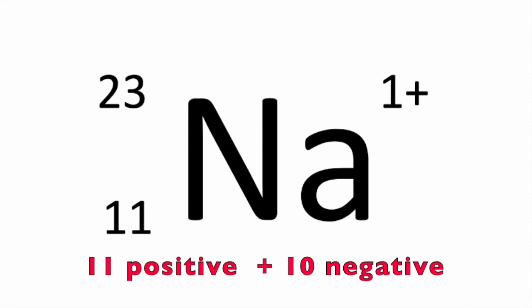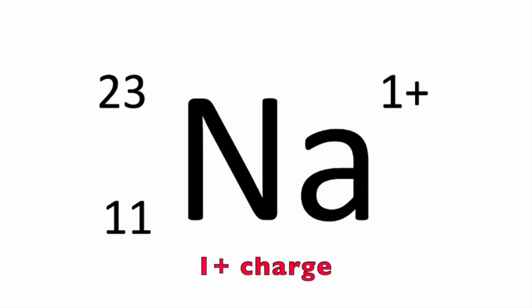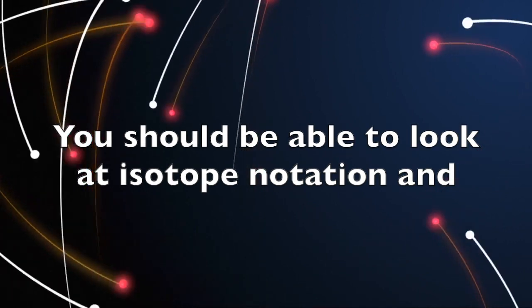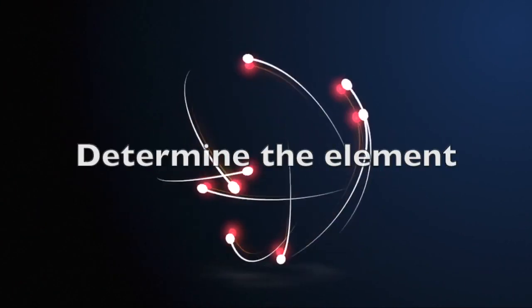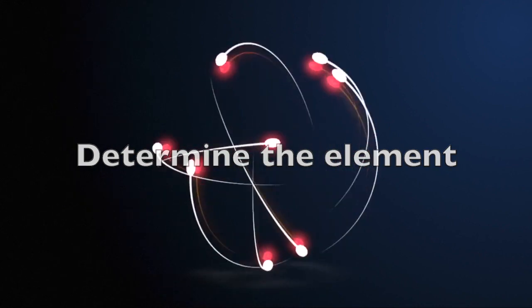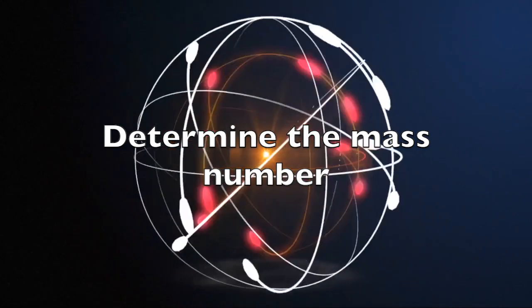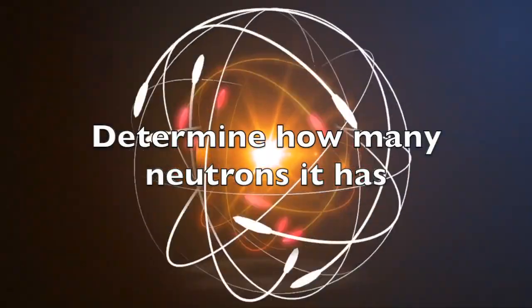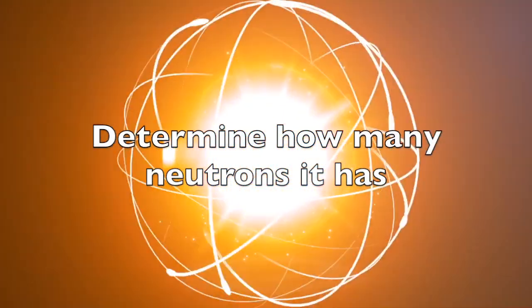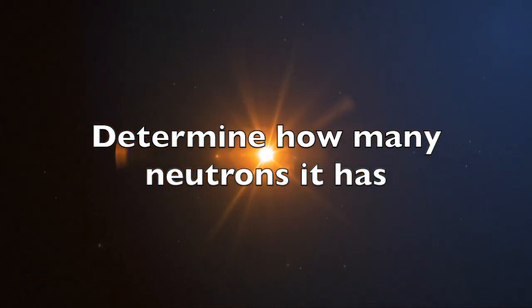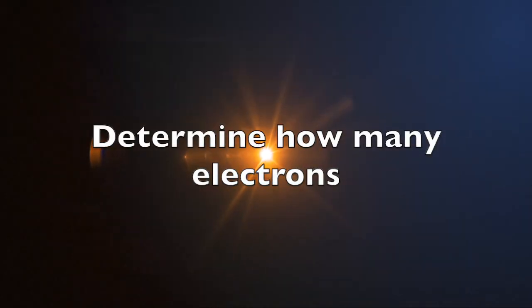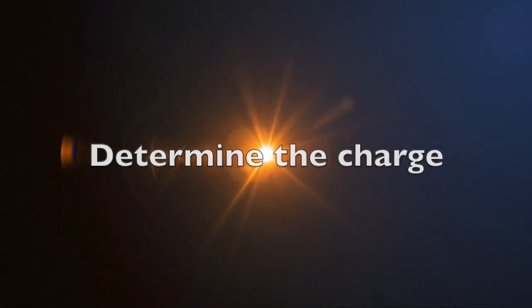11 positive charges plus 10 negative charges leaves us with one extra positive charge. So you should now be able to look at isotope notation and determine what the element is, how many protons it has, the mass number, how many neutrons it has by taking the mass number and subtracting the number of protons, how many electrons it has, and the charge, if it has one.